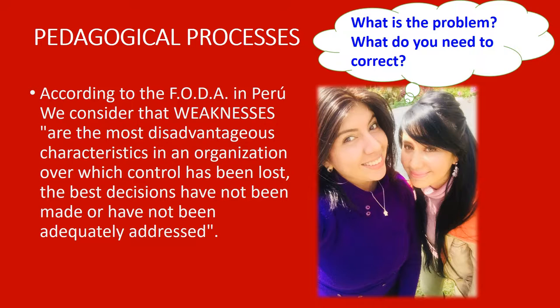According to the FODA analysis in Peru, weaknesses are the most disadvantageous characteristics in an organization over which control has been lost, where the best decisions have not been made or have not been adequately addressed. We can see a teacher asking herself: what is the problem and what do you need to correct?